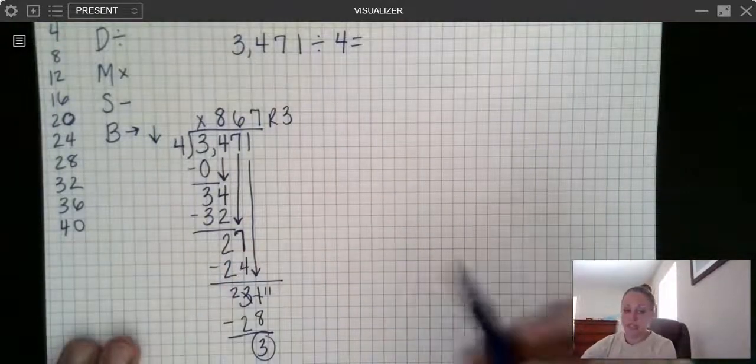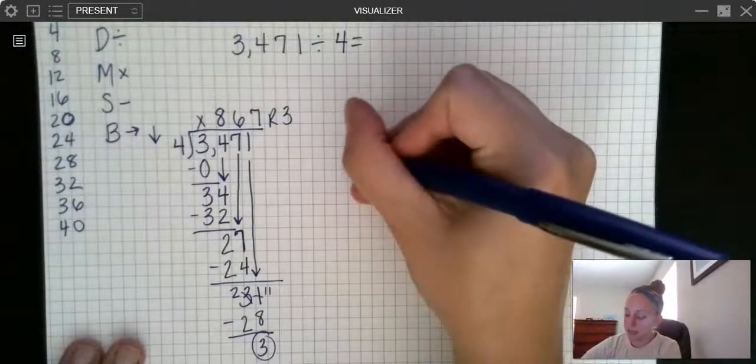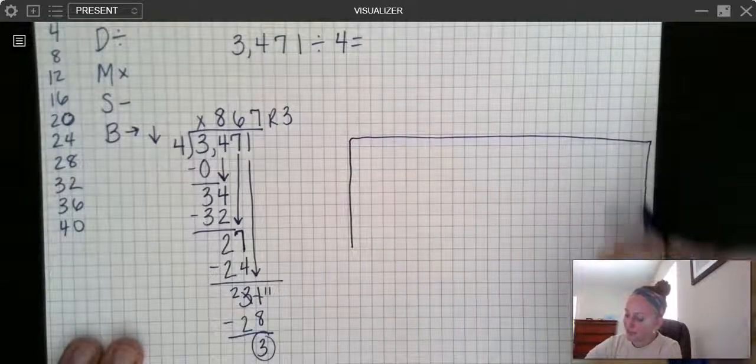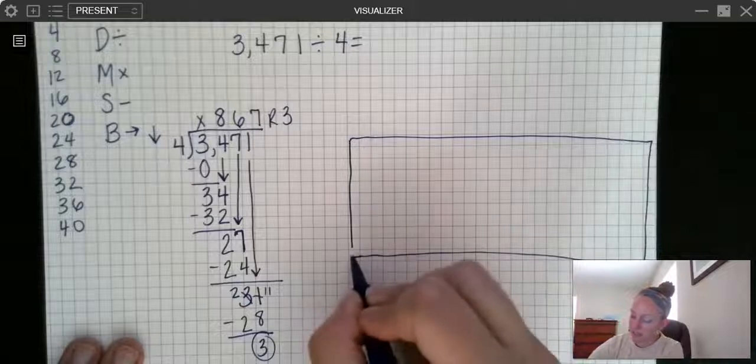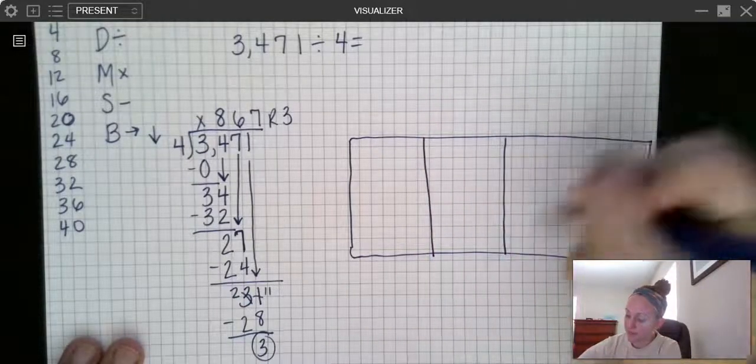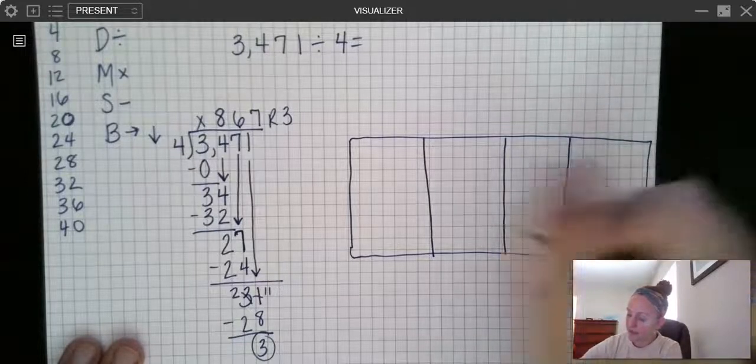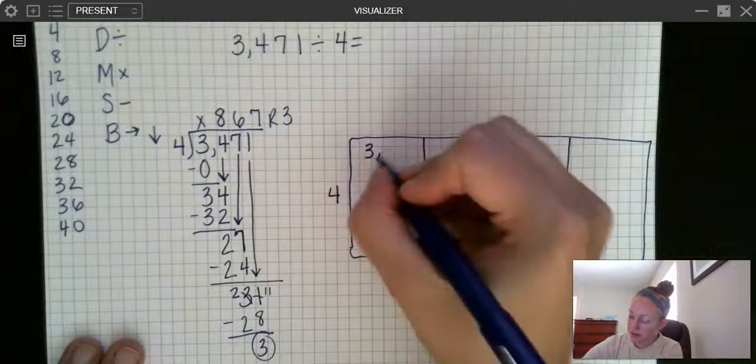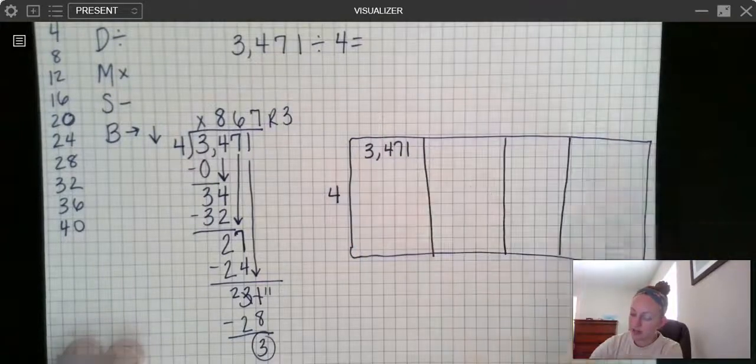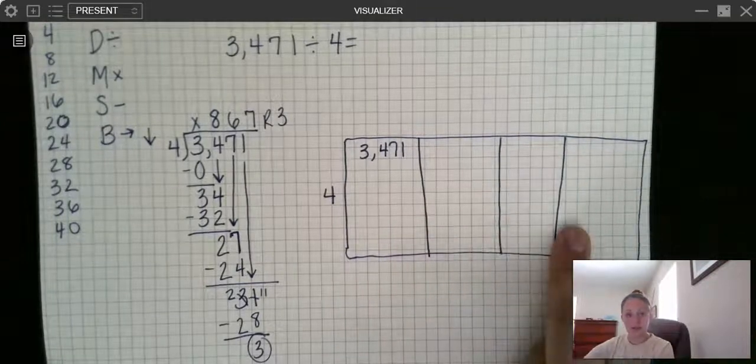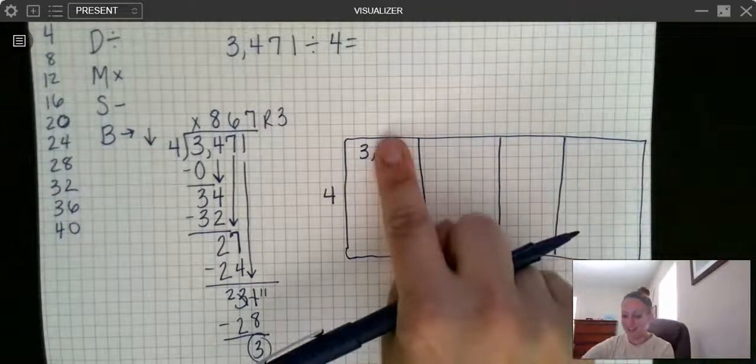Now I wanted you to see this side by side with the area model because, again, your brain may be hurting right now and you may be like, wow, that's tough. And I'm going to make mistakes. And that is okay for your brain to be thinking that. Remember, I write my four out here, I write my 3,471 in here. Thousands, hundreds, tens, ones, right?